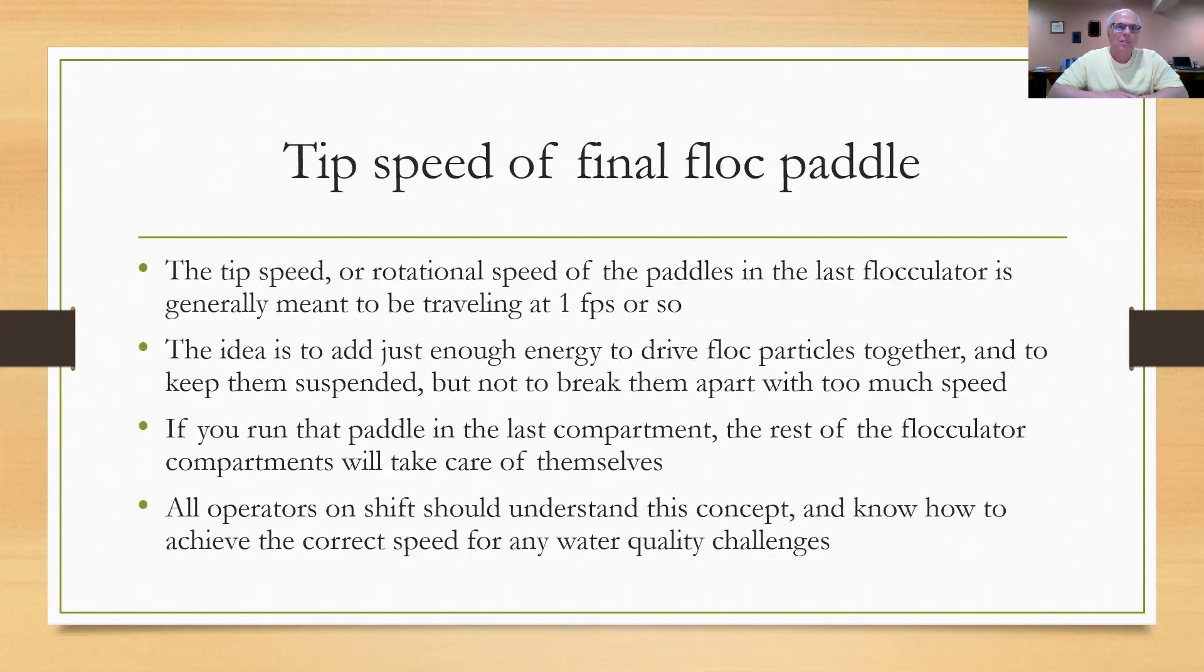So again, let me just emphasize the final tip speed of the final floc paddle. The rotational speed of paddles in the last flocculator is generally meant to average one foot per second or so. The idea is just enough energy to drive the floc particles together and to keep them suspended, but not to break them apart, as I mentioned. If you run that paddle in the last compartment, the rest of the flocculator compartments will take care of themselves. You don't have to mess around with them. You don't have to do any calculations. Stick to that last compartment. Get that one foot per second and adjust it a little bit faster, a little bit slower if you need to, and you should be okay. Every operator on shift should know how to do that.